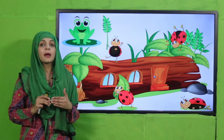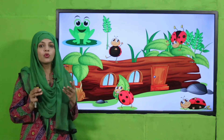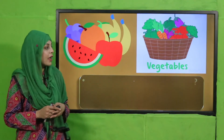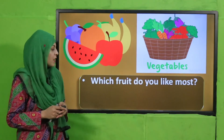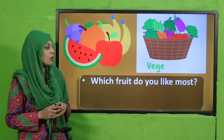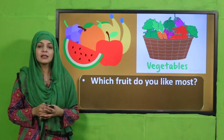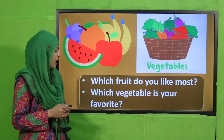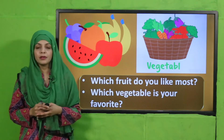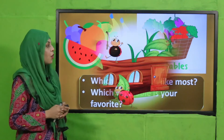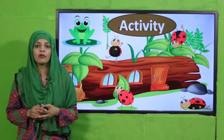In previous lectures we discussed what things we get from plants, like fruits and vegetables. So let's quickly recap what we did in the previous lecture. Quickly answer: here you can see some fruits and vegetables. Which fruit do you like the most? For example, I like watermelons. Very good! And which vegetable is your favorite? I like potatoes. Very good!